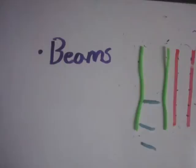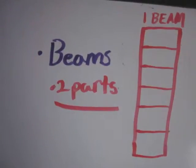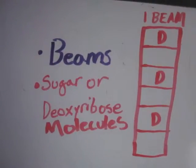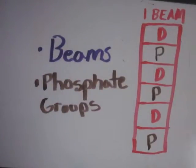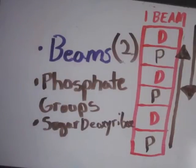So let's start with the beams. The beams are made of two parts: the deoxyribose molecules, or another type of sugar represented by the D, and then there are the phosphate groups represented by the P. And there are two beams, one going up and one going down.